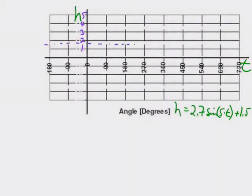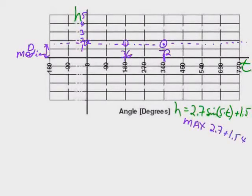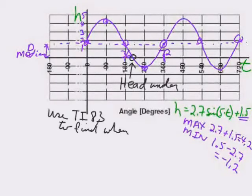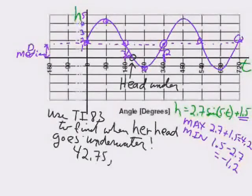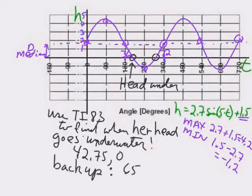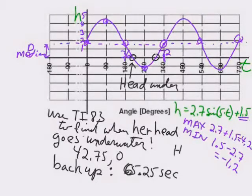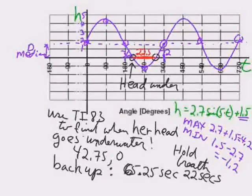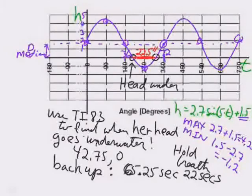We graphed it on graph paper as well. We calculated when her head goes under the water. You can eyeball it: at about 36 seconds for half a cycle. The calculator actually tells you it's 42.75 seconds. The distance between the two crossings — when her head goes under and comes back up — is about 22.5 seconds. So she has to hold her breath for 22 and a half seconds.